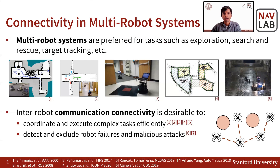Multi-robot systems are preferred for various tasks such as exploration, search and rescue, and target tracking. One of the main advantages of multi-robot systems is inter-robot communication for sharing and comparing information. This communication connectivity allows robots to coordinate and execute complex tasks efficiently, and also to detect and exclude any robot failures or malicious attacks.